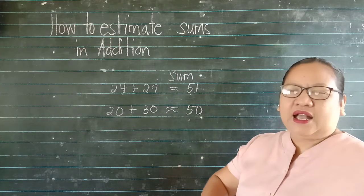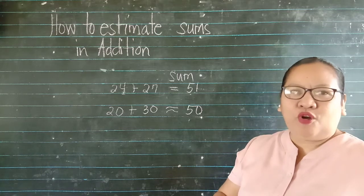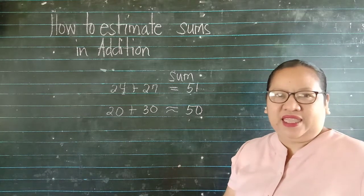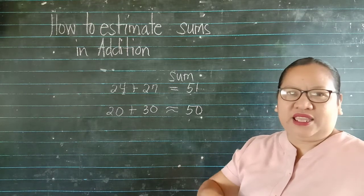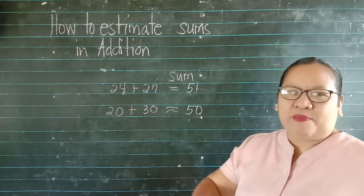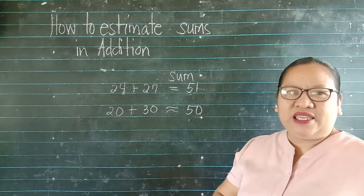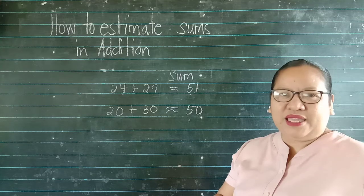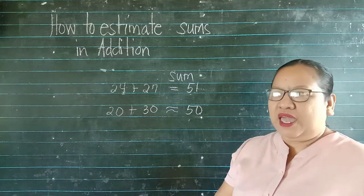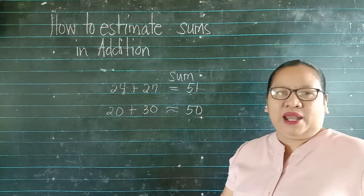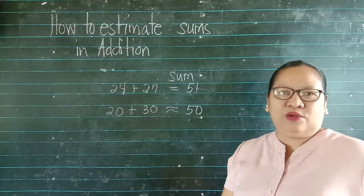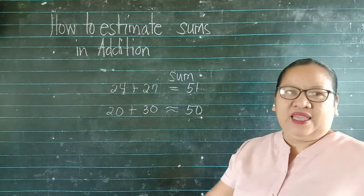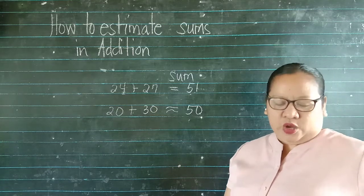Kapag nag-i-estimate, depende po kung ano ang instruction sa inyo. Kung nearest tens, nearest hundreds, or nearest thousands. Kapag sinabing round this number to the nearest place indicated, or to the highest place indicated, ibig sabihin kung ano ang pinakamalaking place value doon sa number na yun, doon mo siya i-estimate. Maliwanag po ba?